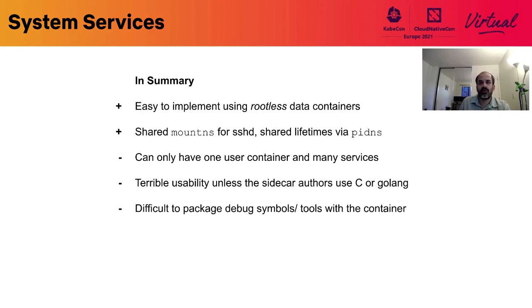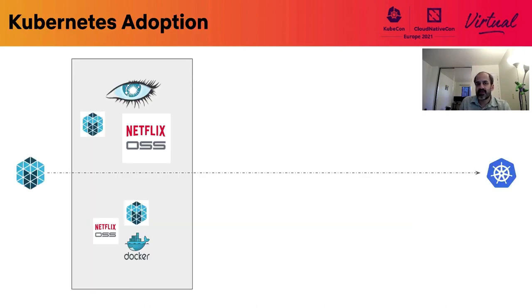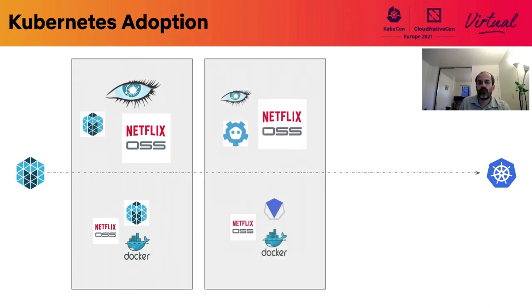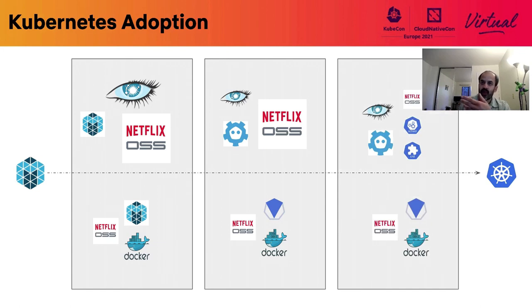So what has this got to do with the kubelet? Titus started life as a Mesos cluster but starting in 2019, we moved to virtual kubelet. Over the past year, we have been adopting more Kubernetes components in the control plane like kube-scheduler, CRDs, and controllers which do fleet management and usage-based scheduling. So in 2020, we decided that we would try to migrate to the kubelet so we can run multiple user containers and get benefits of the Kubernetes ecosystem.